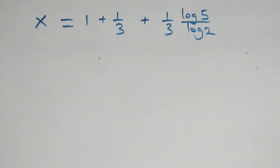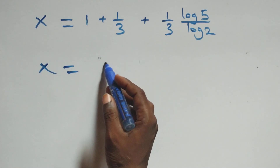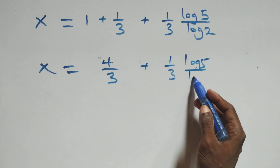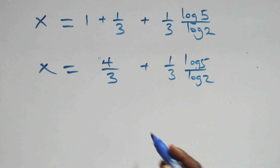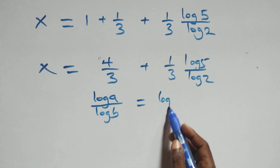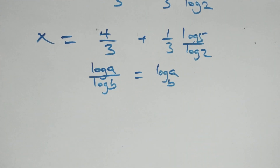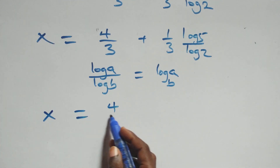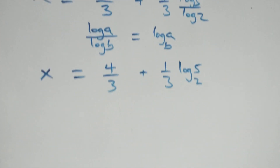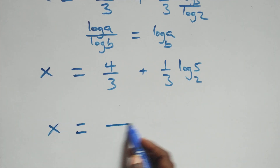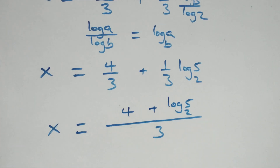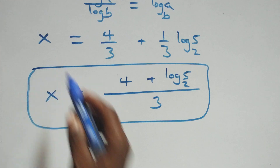So x equals to 1 plus 1/3, which is 4/3, plus 1/3 times log 5 over log 2. Applying the change of base formula — log a over log b equals log a to base b — we have x equals to 4/3 plus 1/3 times log₂5. Bringing this together as one fraction, x equals to (4 + log₂5) over 3.